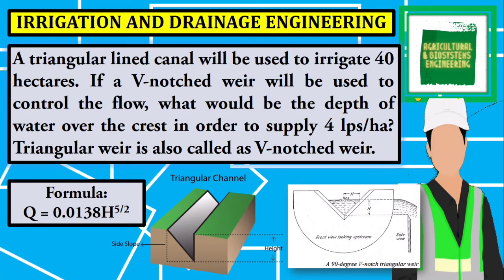Welcome to Agricultural and Biosystems Engineering Tutorial Channel. This time, I will be solving this problem under irrigation and drainage engineering. A triangular lined canal will be used to irrigate 40 hectares. If a V-notched weir will be used to control the flow, what would be the depth of water over the crest in order to supply 4 liters per hectare?